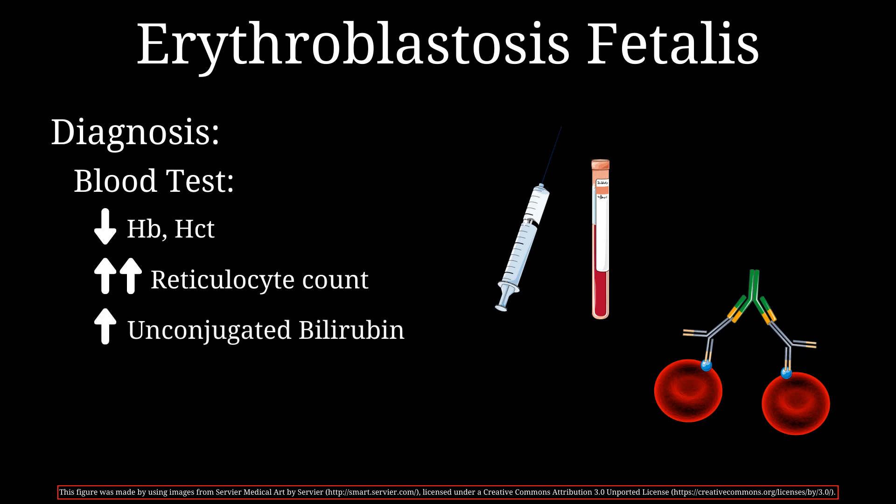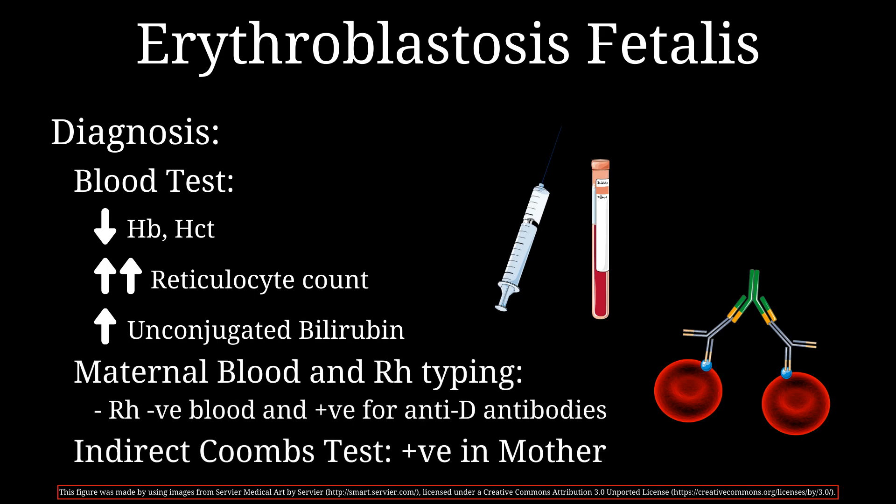Unconjugated bilirubin levels will also be increased due to the increase in recycling of hemoglobin from hemolysis. Maternal blood and RH typing can be performed during a prenatal visit to check for RH negative blood and detect any anti-D antibodies in the mother's circulation. Anti-D antibodies can be detected by the indirect Coombs test — a separate video covers the indirect and direct Coombs test and their clinical significance.